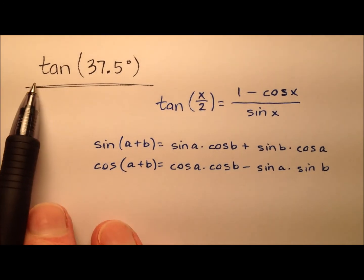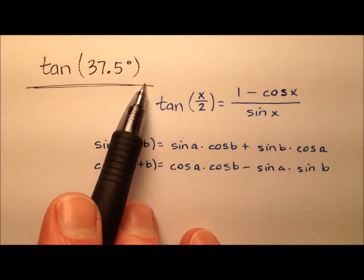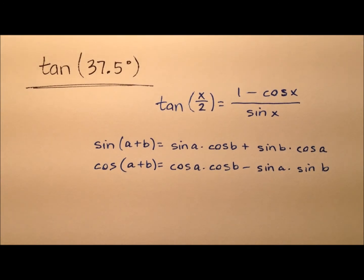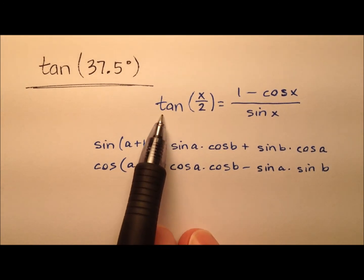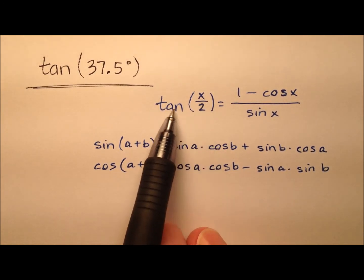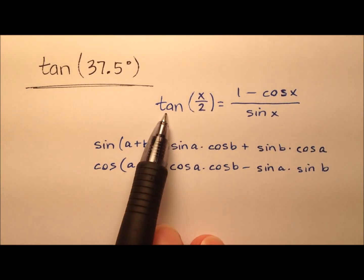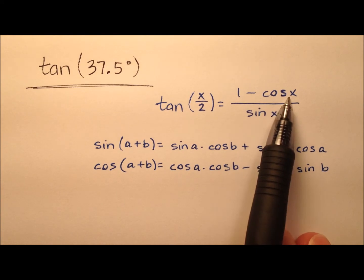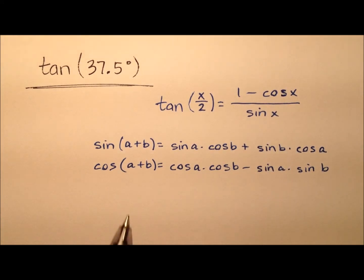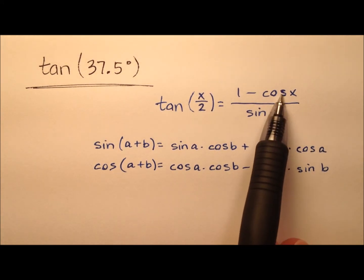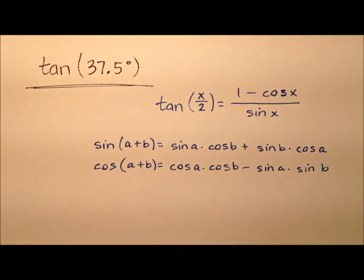In this example, we're going to work to find the exact value for the tangent of 37.5 degrees. We'll do so by using this half-angle identity for tangent. We had a few choices for this half-angle identity, and I went with 1 minus cosine x over sine of x. We'll also employ a couple of supporting identities because we'll need those for the cosine and sine values. So let's go ahead and get started.